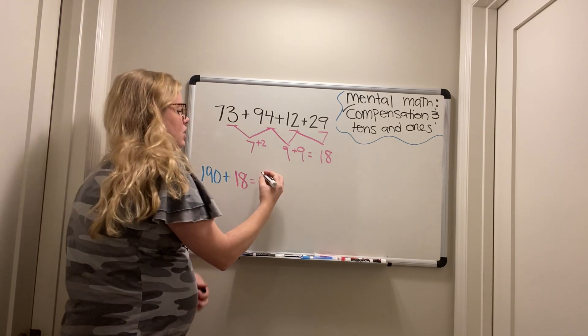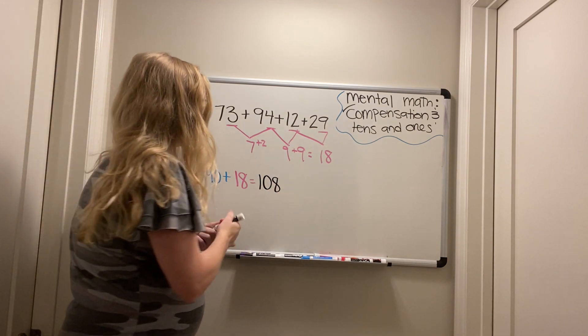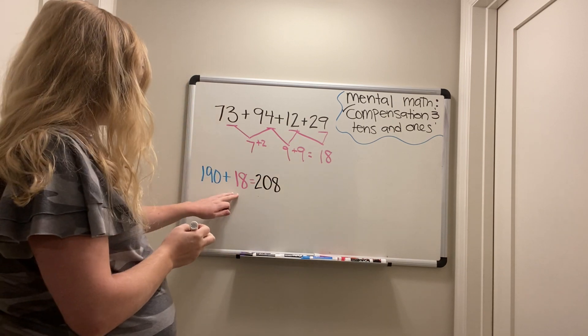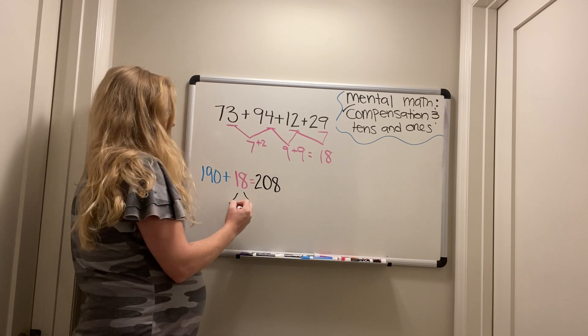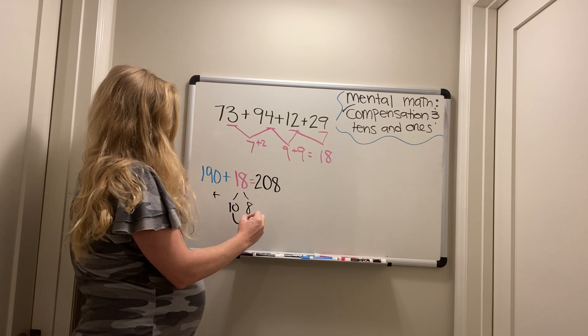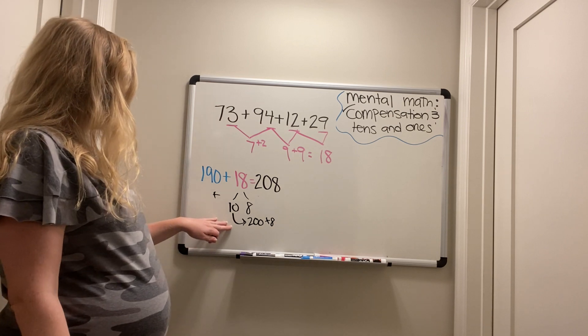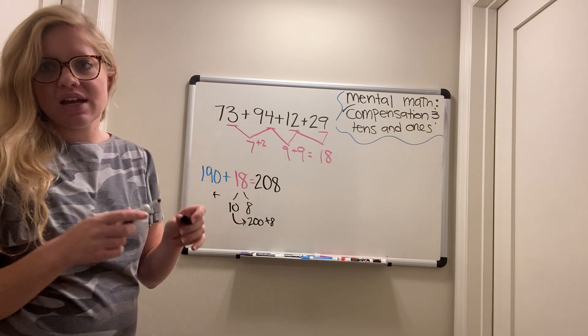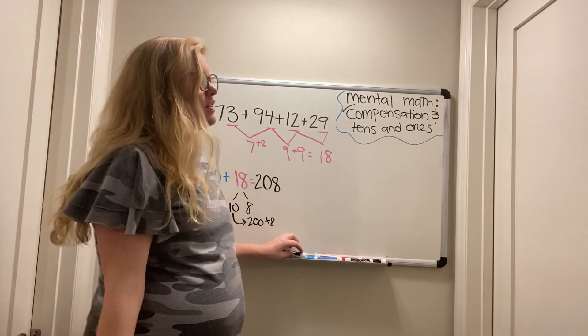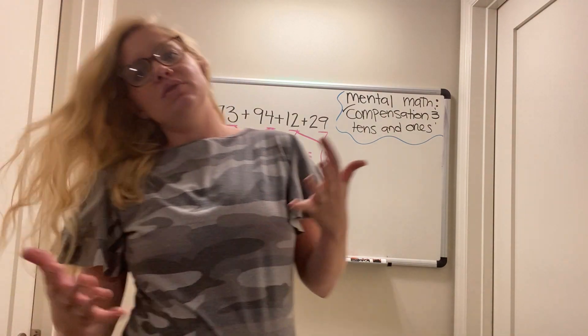One hundred eight. Nope. Sorry. Two hundred eight. Right? Because if we break this up into ten and eight, 190 plus ten is two hundred plus eight. Scholars, do you remember this one? It's the make ten strategy that we used yesterday. So you can use all these strategies together to be able to add a bunch of numbers in your head when you want to.